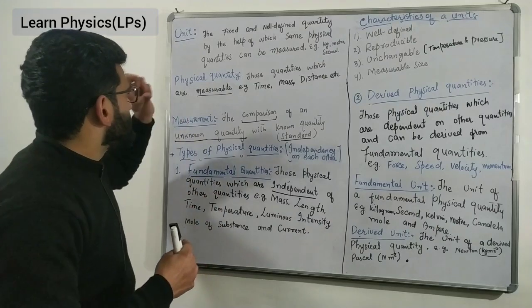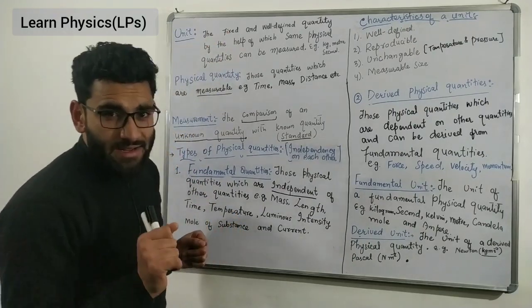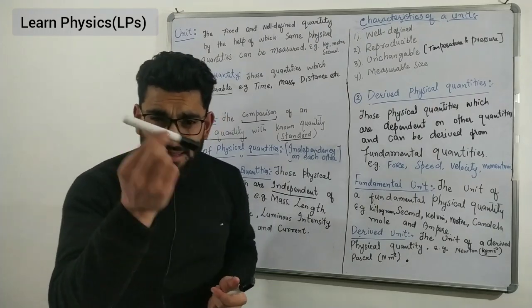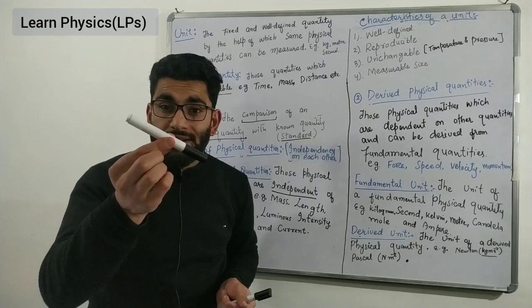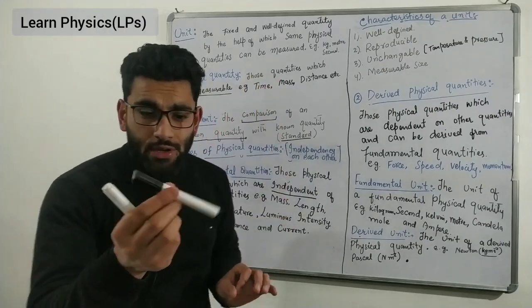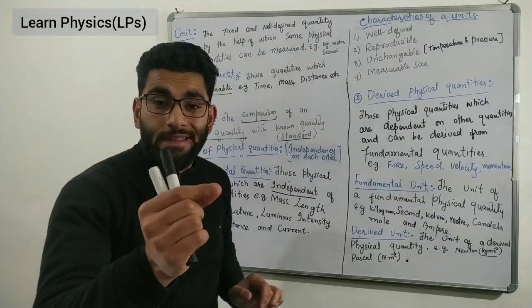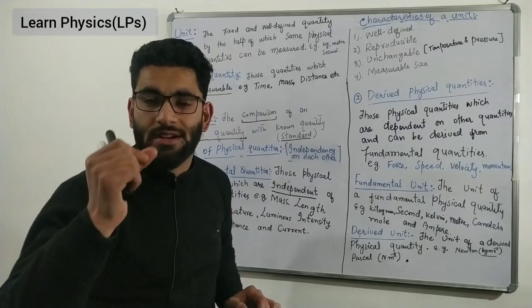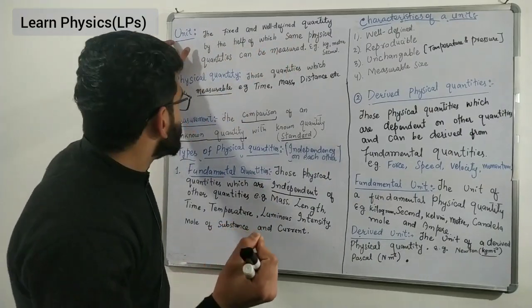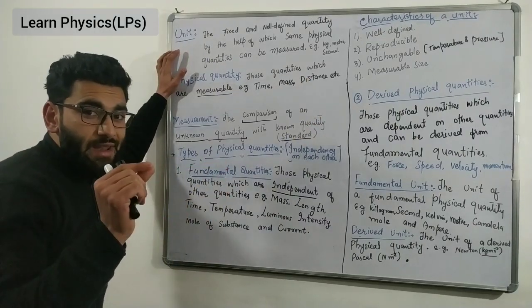Before discussing fundamental units, let us understand what a unit is. A unit is simply a reference object or standard. It is defined as a fixed and well-defined quantity by the help of which the same physical quantities can be measured. For any particular physical quantity there is a particular reference unit, which we call the standard unit.